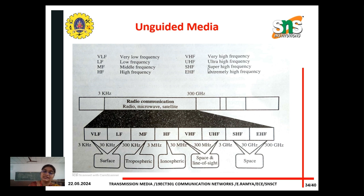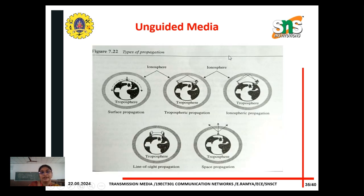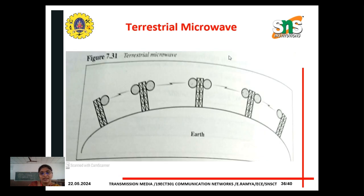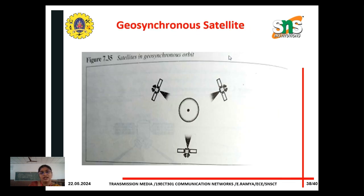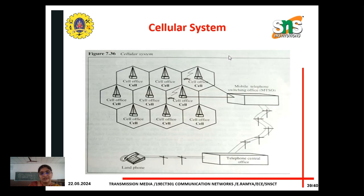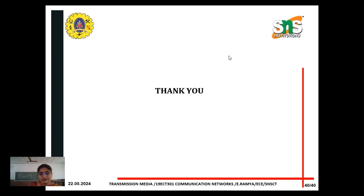Now, unguided medium. We discussed guided medium — twisted pair, coaxial, and fiber optical. In unguided medium, we are going to discuss radio communication, where higher frequency ranges are used. Unguided medium includes terrestrial microwave, satellite communication, geosynchronous satellite, and cellular systems as real-time examples of unguided or wireless medium.